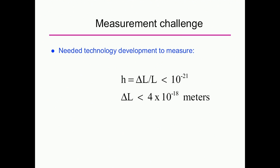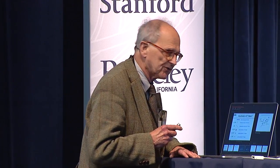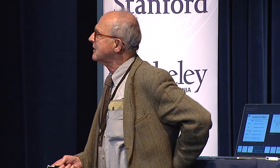That's terribly small. For example, the detector that made the detection was four kilometers long, and when you multiply 4,000 meters by 10 to the minus 21 you get something like 10 to the minus 18 meters. Most people when this was proposed thought this was completely insane — you could not do something like this.